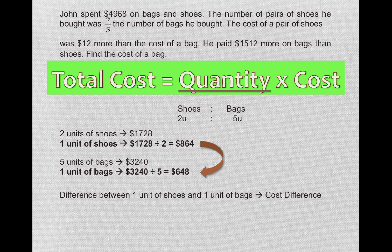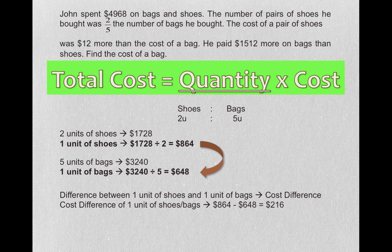The difference between one unit of shoes and one unit of bags must be due to the cost difference. It is entirely due to the cost difference of $12 for each bag and each pair of shoes. $864 minus $648, we get $216. This is the cost difference of one unit of shoes and one unit of bags.